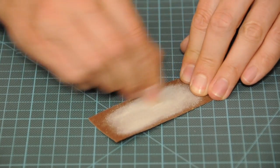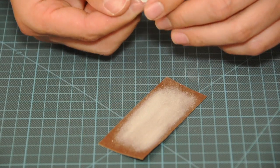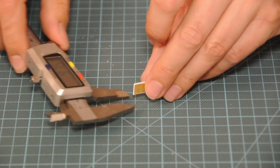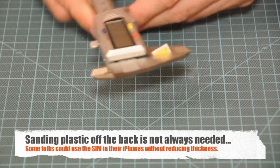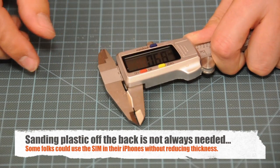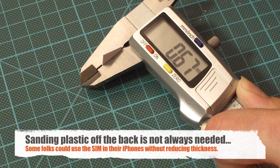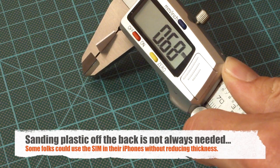And just sand off a little bit of plastic on the back side of it. Let's see. So this should be done. So what does it say? It says 0.67, 0.68. So, we're done.